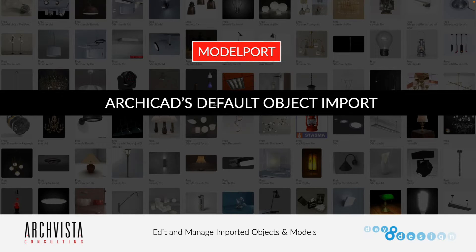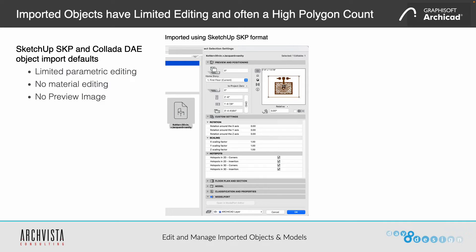The first topic is ArchiCAD's default object import process, starting with the SketchUp SKP and Collada DAE import defaults. Many of you have used those — they're great for accessing the 3D Warehouse and numerous other websites and libraries on the web. But there are limitations. One of the biggest is limited parametric editing. When you open those objects in ArchiCAD through object settings, you have limited custom settings: rotation, scaling, hotspots — that's about it.